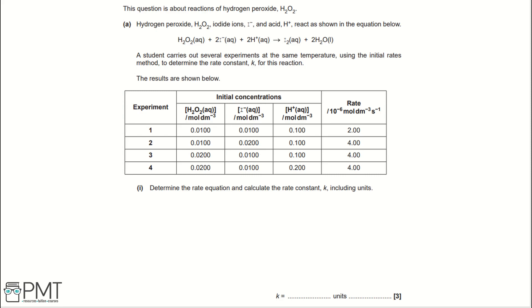To start, let's write a general rate equation for this reaction. A general rate equation for this reaction will be rate equals K and then each of our reagents. So, H2O2, I-, and H+. We then need to establish which order each of these reactants are.